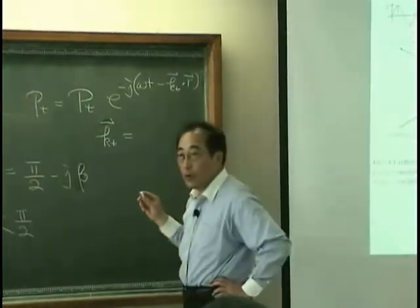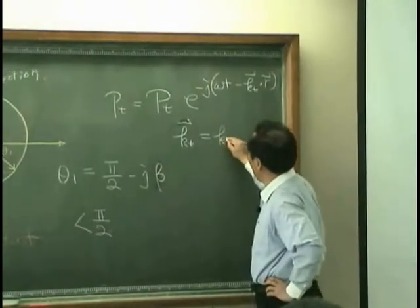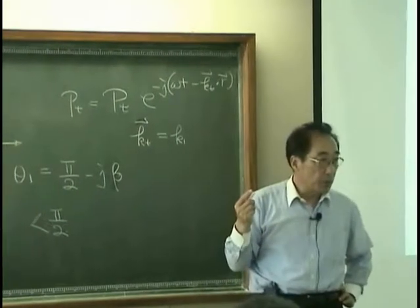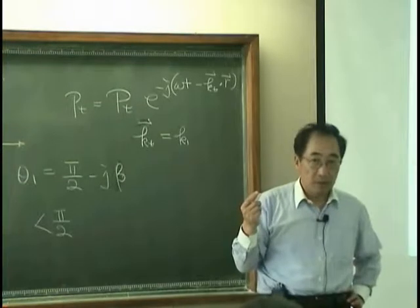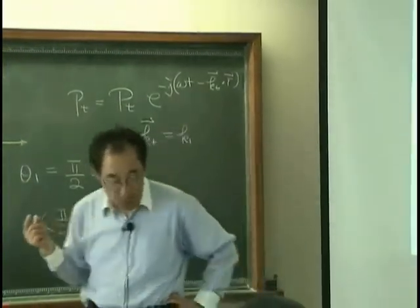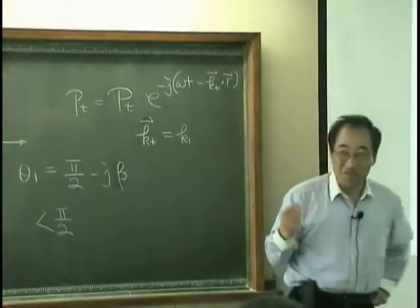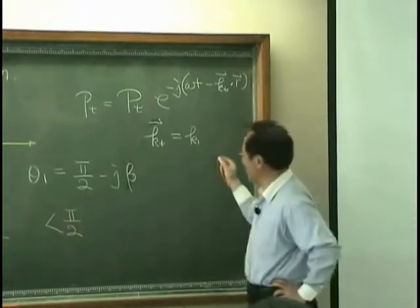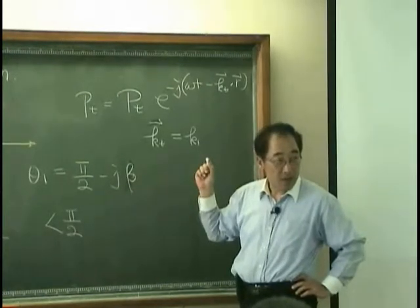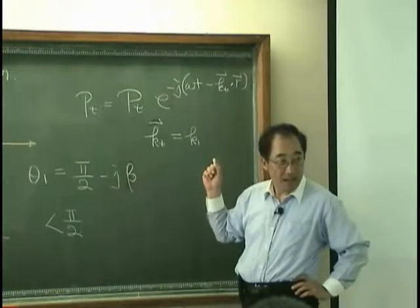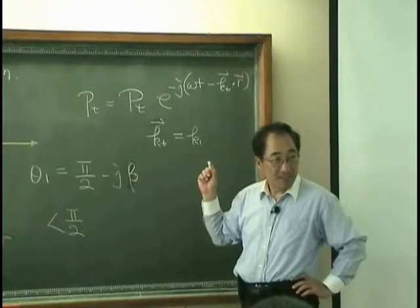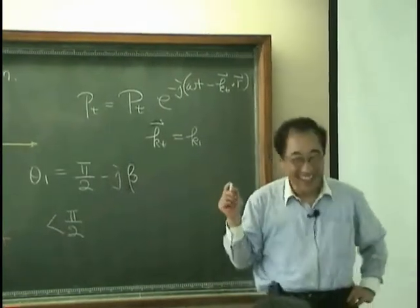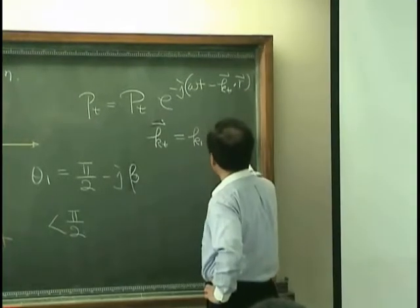What component do we have in x direction? That is K1, that is the wave number in medium 1. And in x direction how the wave number would be? Yonghua, what is the wave number in x direction? K1 sine, cosine.